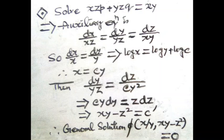Considering only the first two fractions, we get dx/x = dy/y, because z cancels out. That means log x = log y + log c, so the solution is x = cy, or equivalently x/y = c.